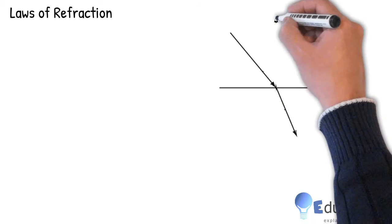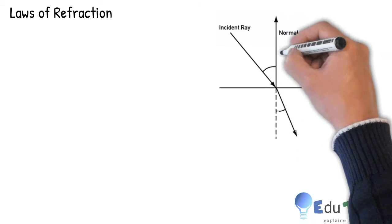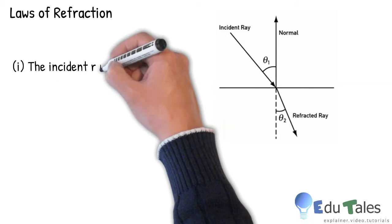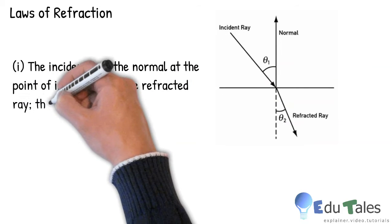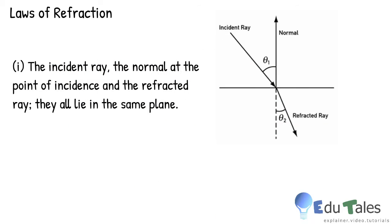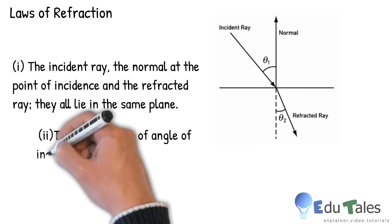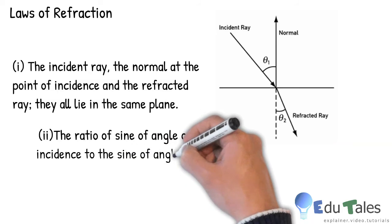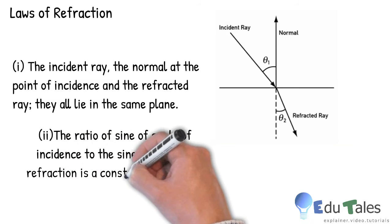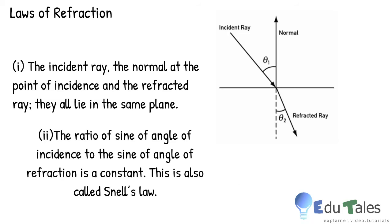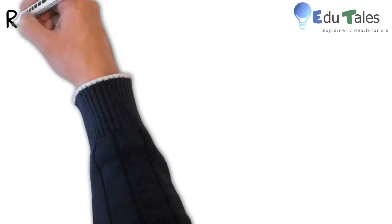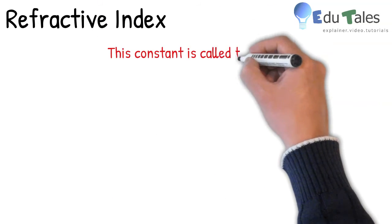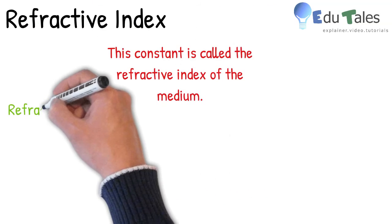There are two laws of refraction. The first law states that the incident ray, the normal at the point of incidence, and the refracted ray, they all lie in the same plane. Whereas the second law states that the sine of angle of incidence to the sine of angle of refraction is a constant. This is also called Snell's law. This constant is called the refractive index of the second medium with respect to the first medium.